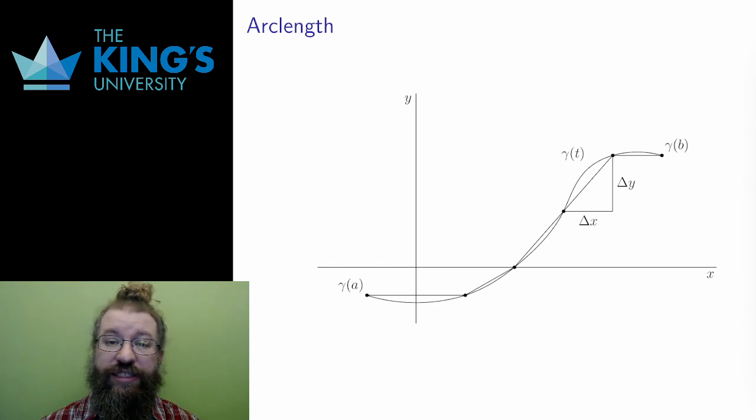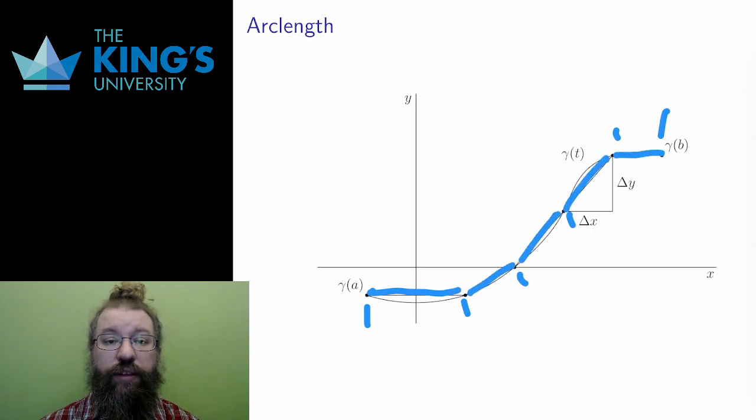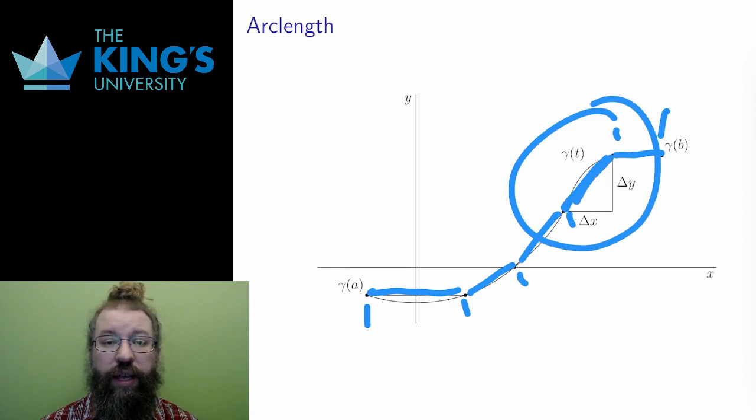This approximation process divides the curve into pieces and approximates the length of each piece by the length of a straight line between two points. In the diagram, I focused on the second last piece and the straight line that approximates the curve. That straight line is the hypotenuse of a right triangle, where the other two sides are the change in x and the change in y over this part of the curve. The length of this segment is given by Pythagoras, the square root of the squares of the changes in x and y.